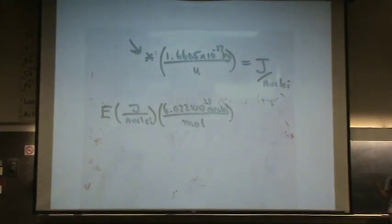There's 6.022 times 10 to the 23rd nuclei per mole. That's Avogadro's number. It's atoms per mole, molecules per mole, particles per mole, whatever unit you need up here at the top, in this case, nuclei per mole.